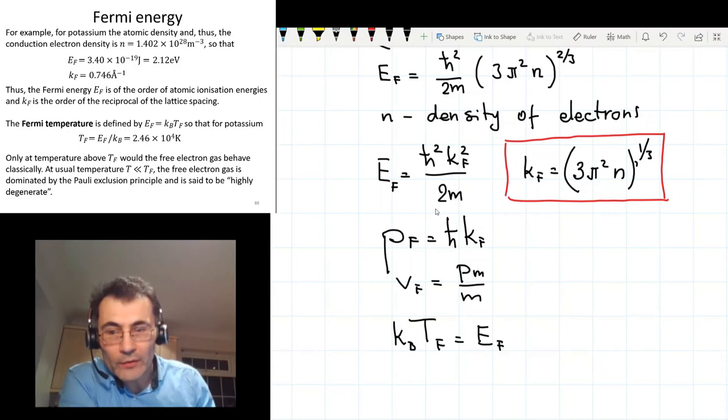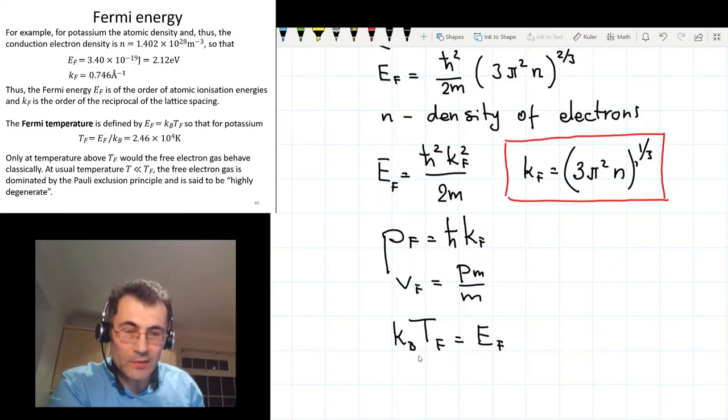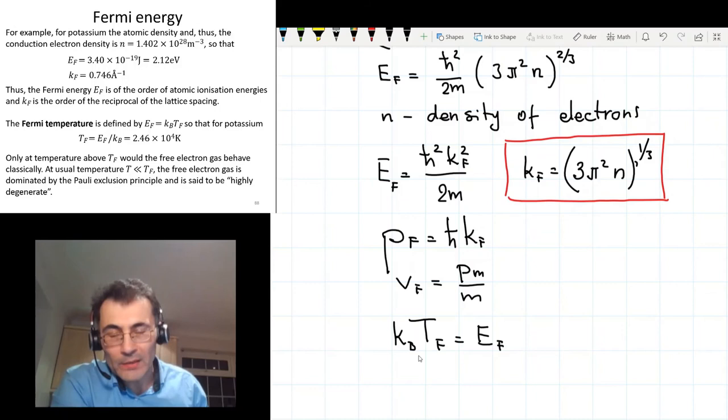So the Fermi energy is of the order of a few electron volts, which also corresponds to roughly a few units of 10⁻¹⁹ joules. Then if we substitute this value of energy into last expression to calculate the Fermi temperature, then we can find that Fermi temperature for all metals is very high. It's of the order of 20,000 Kelvin. So it's significantly larger than the melting temperature for all materials. And that means that we can always safely assume that any practical temperature is much lower than the Fermi temperature. In this case, the electronic system is called highly degenerate.